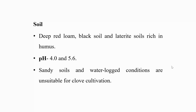Deep red loam, black soil, and laterite soils rich in humus having a pH between 4 to 5.6 are found best for clove cultivation. Sandy soils and waterlogged conditions are unsuitable. Clove can be grown on both slope and level ground.